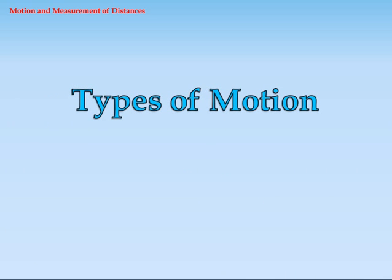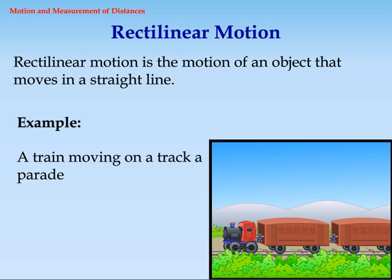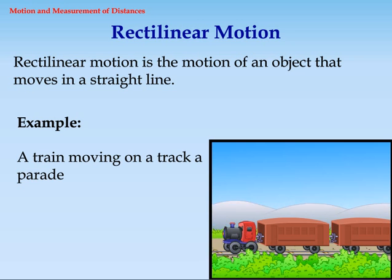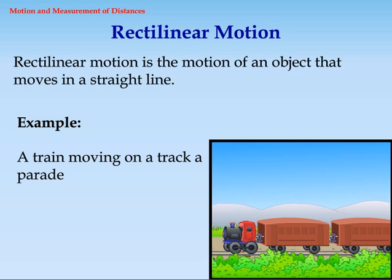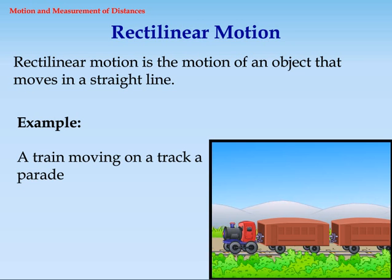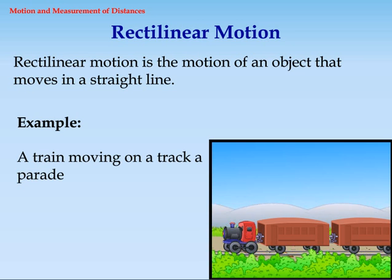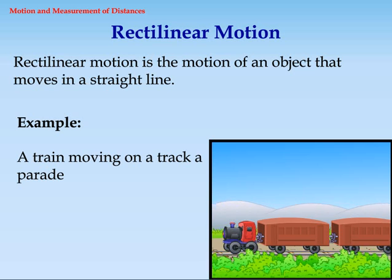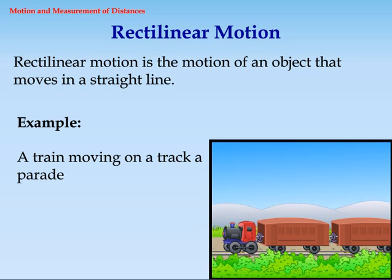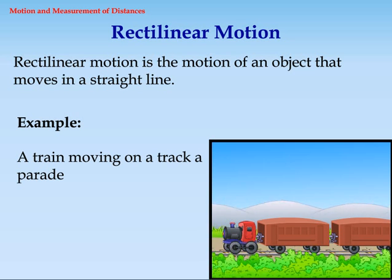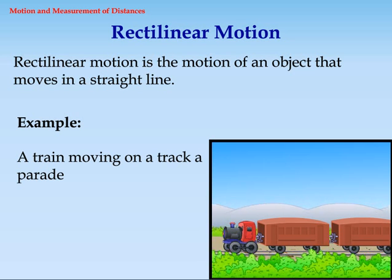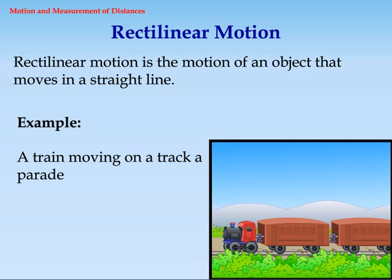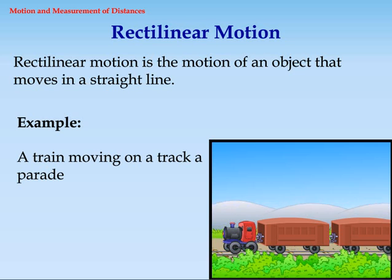Types of motion. Number 1: Rectilinear motion. Rectilinear motion is the motion of an object that moves in a straight line. Example: A train moving on a track.